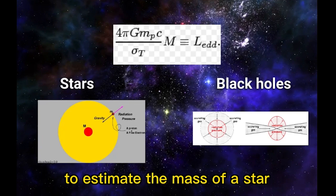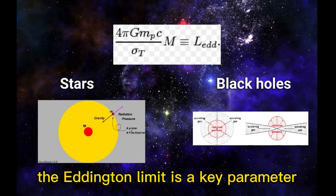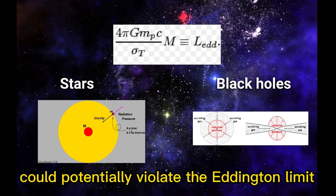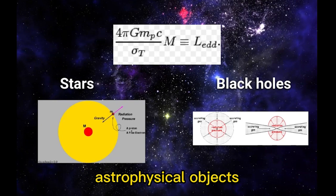The Eddington limit is a key parameter in the study of gravitational wave sources such as merging black holes and neutron stars. Some exotic forms of matter, such as quark matter or strange matter, could potentially violate the Eddington limit or have an Eddington limit that is different from that of traditional astrophysical objects. Thank you for watching.